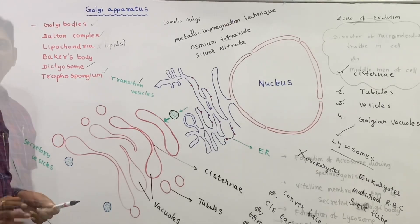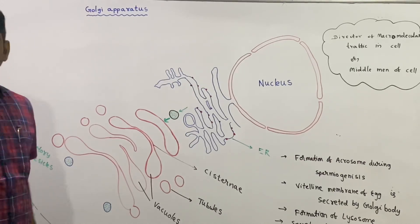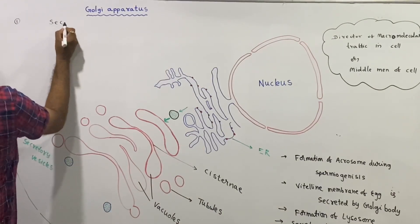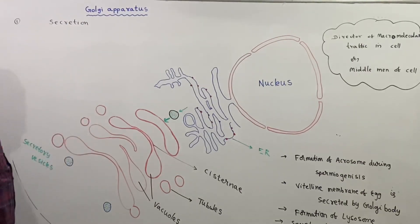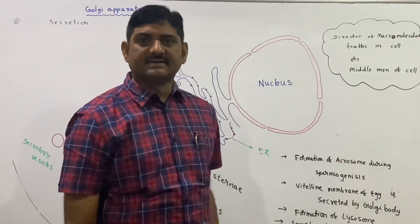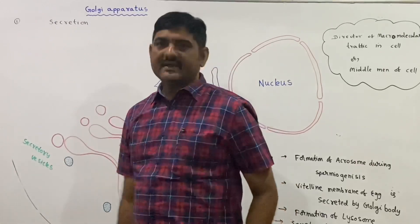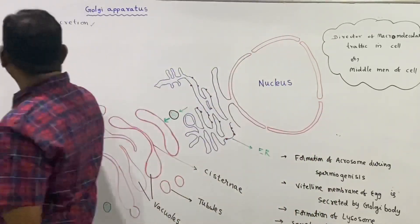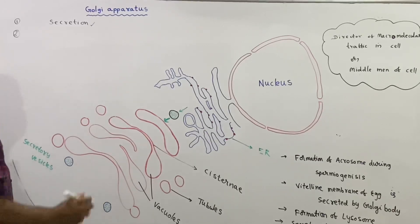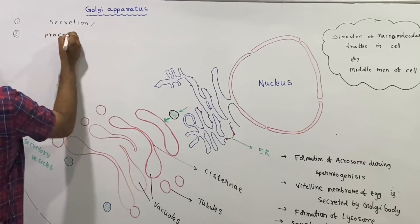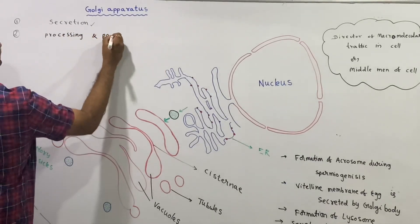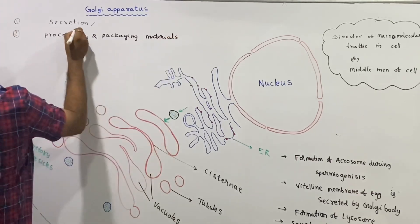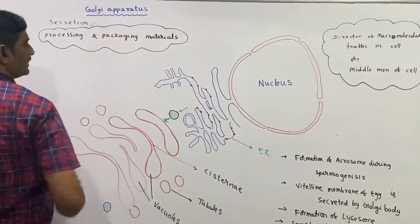Now the functions of the Golgi apparatus. The first and main function of the Golgi apparatus is secretion — secretion of wax, antibodies, mucus, and other materials. The chief function of the Golgi apparatus is secretion.